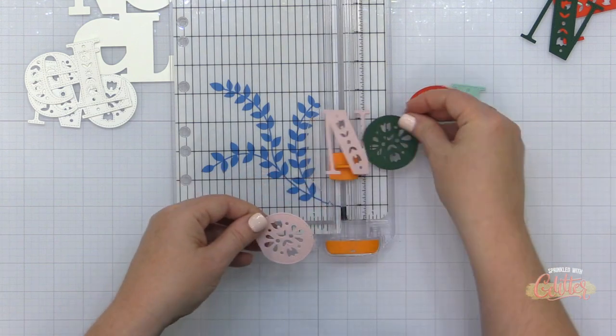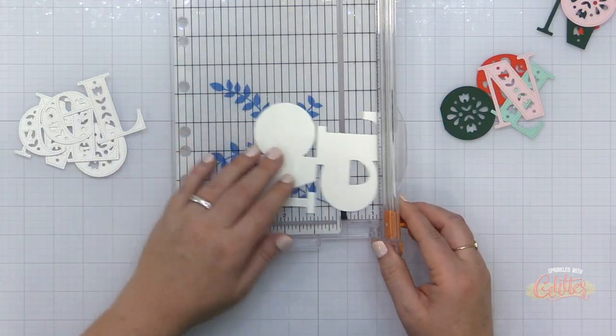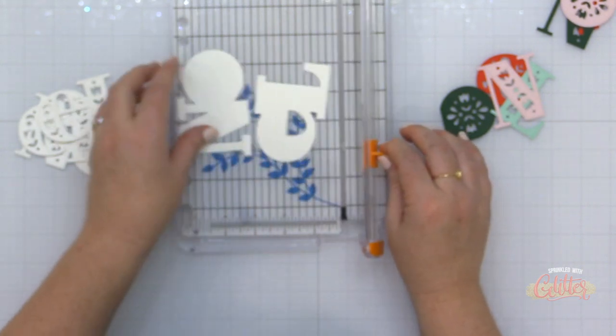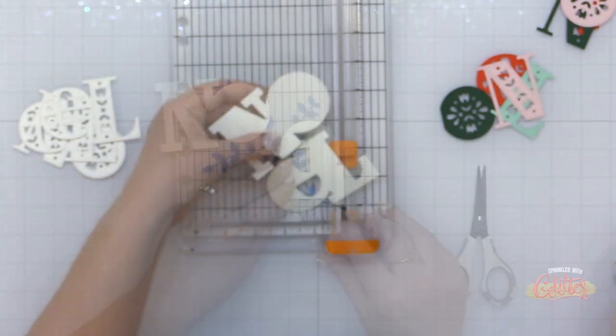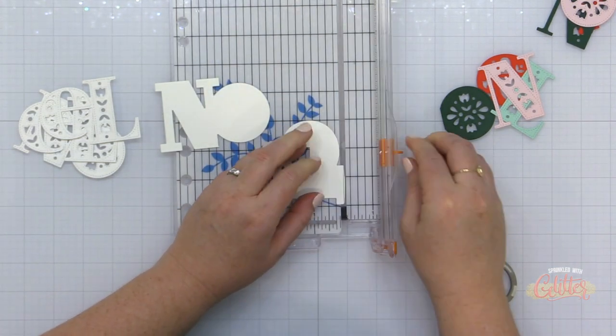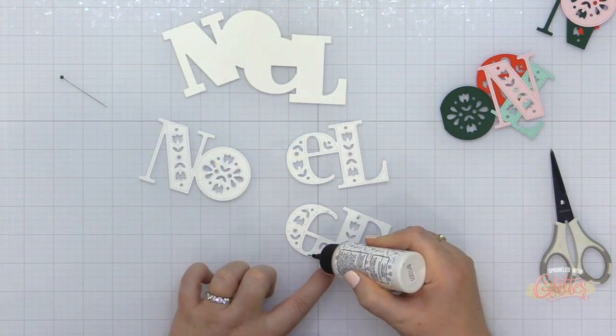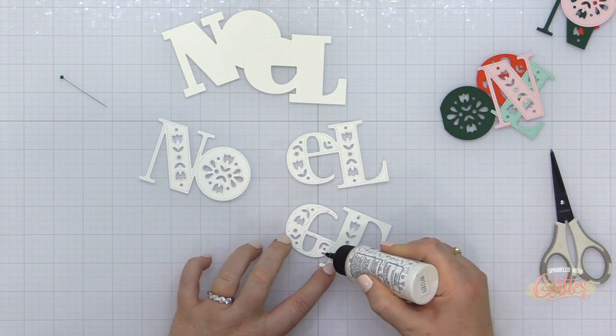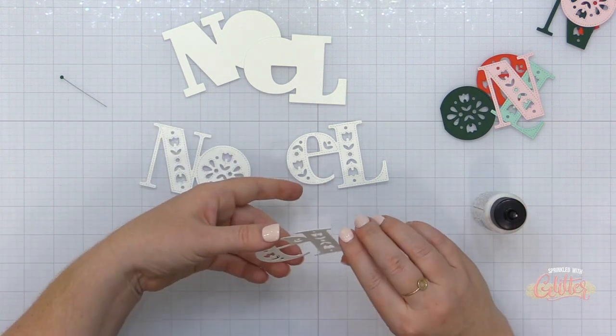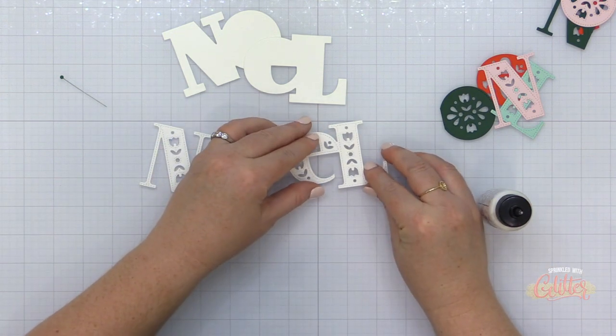Now I also need to trim my base layer to trim this word apart, because it's in a stacked orientation now, and I want to use it horizontally across a slimline card or a mini slimline card. Once again, just using the wire of my wire guide trimmer to guide me in where I'm going to cut this. And now I have an altered die cut here that I can use in a different orientation.